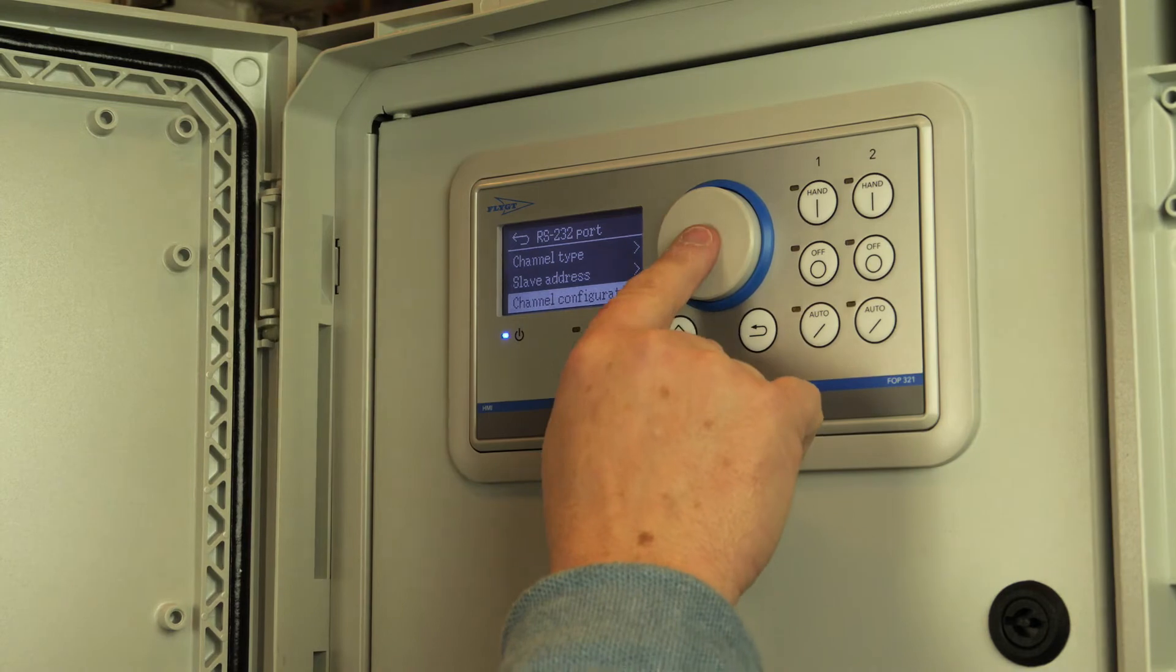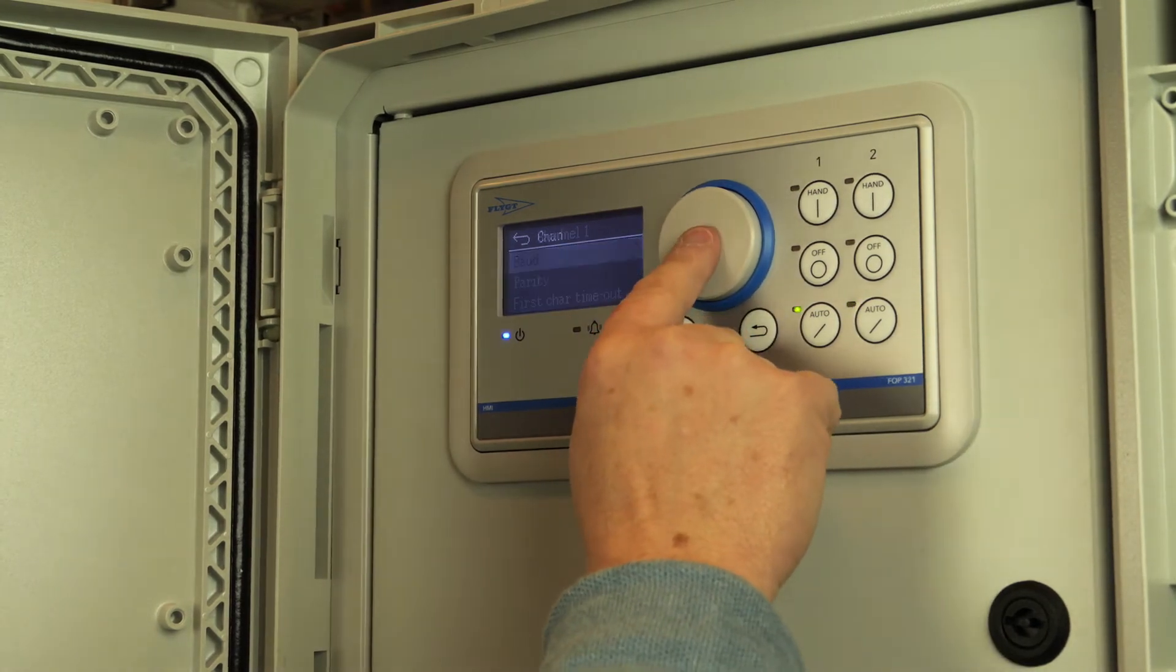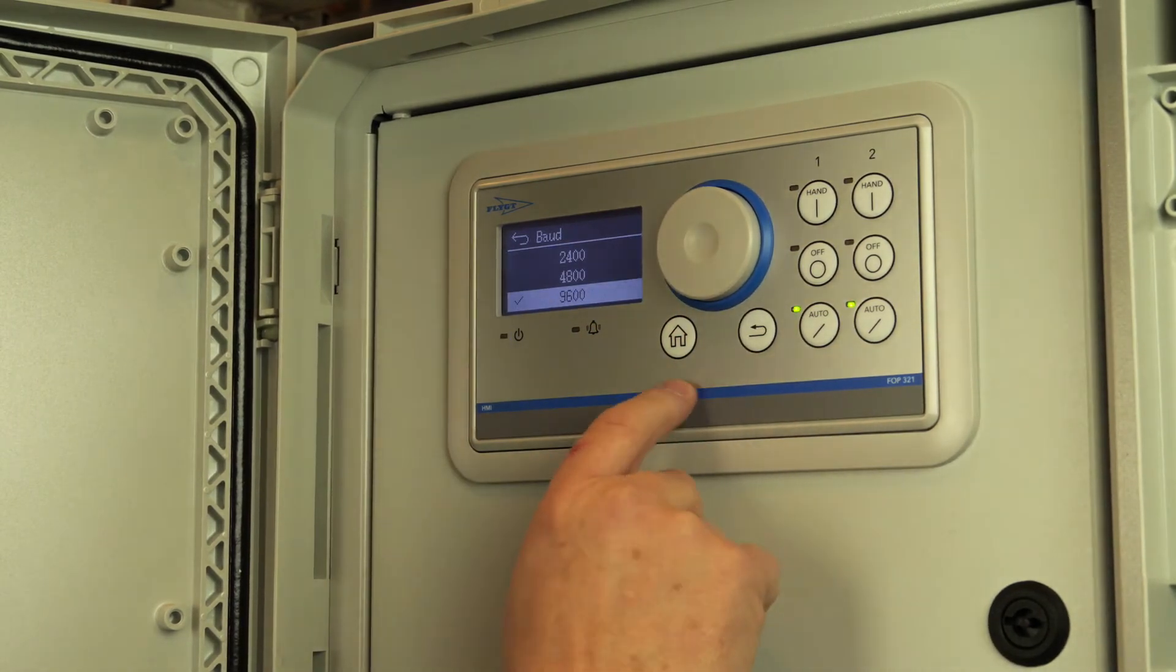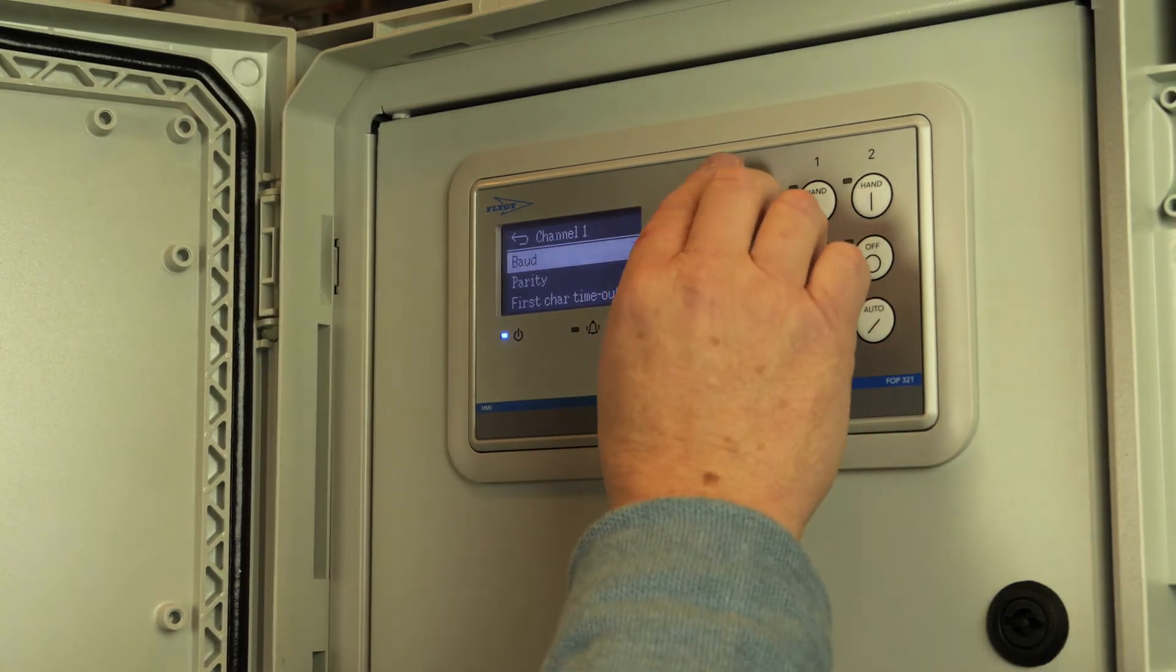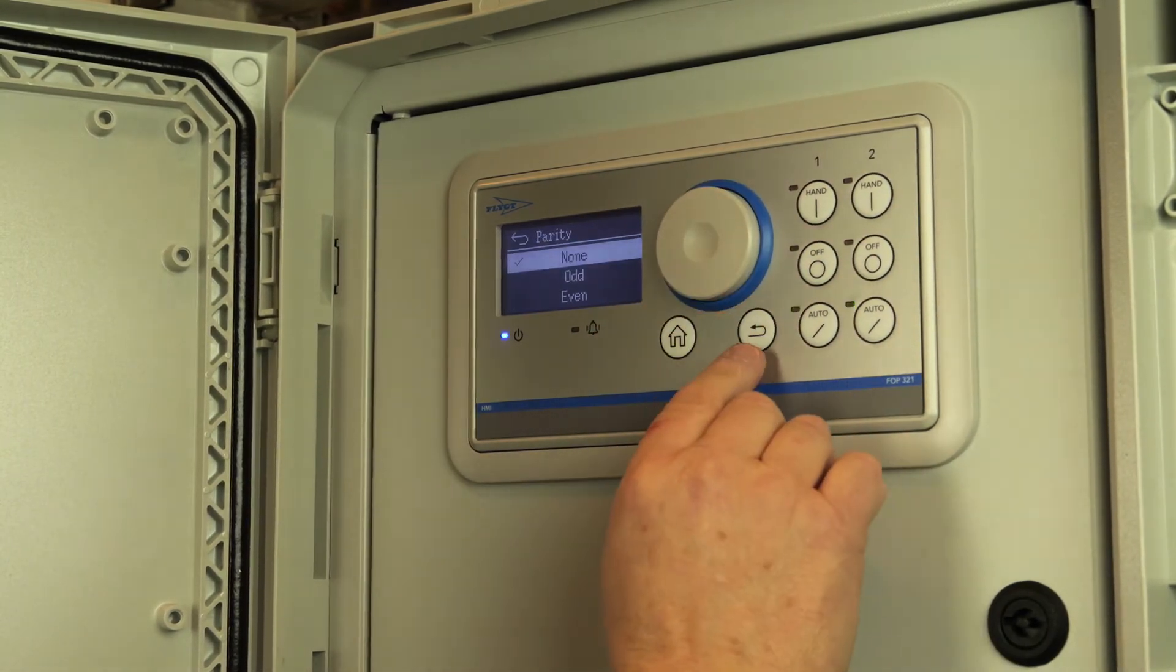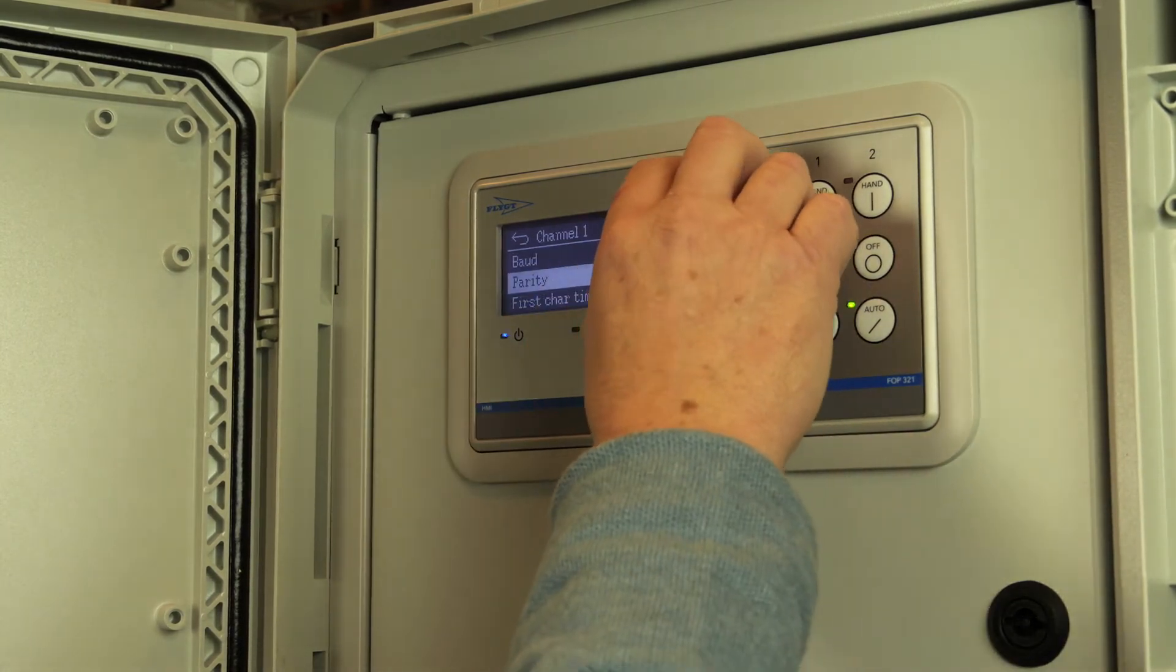So now we're going to set up the baud rate. And if the modem is set for 9600 then that's what you're going to use. And you can also select the parity as none. Take a step backward. And that's it. Now we know we have configured the communication.